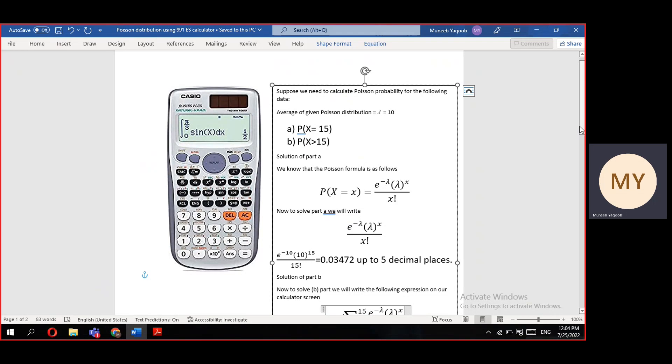For part A, we need to calculate probability of X equals 15, and for part B, we need to calculate probability of X greater than 15. Let us start part A.